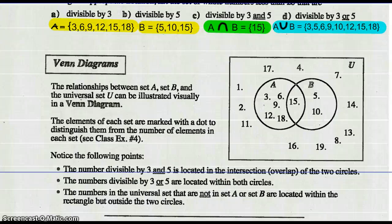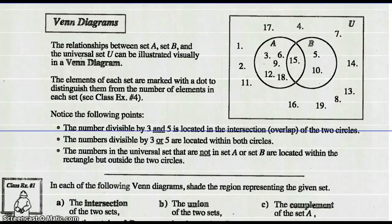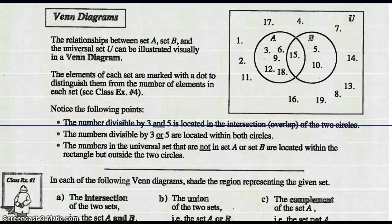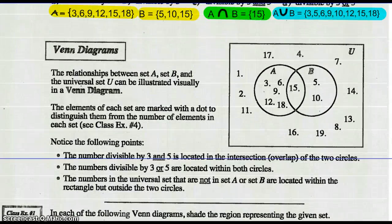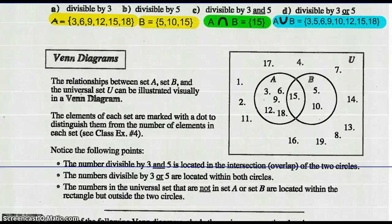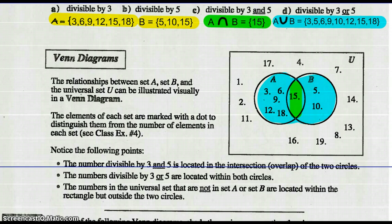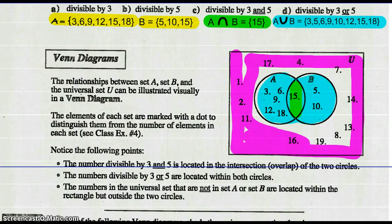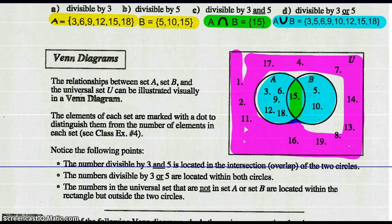The relationship between set A and B and the universal set U is illustrated visually in this Venn Diagram. The elements of each set are marked with a dot to distinguish them from the number of elements in each set. Numbers divisible by 3 and 5 are located in the intersection — the overlap of the two circles. The numbers divisible by 3 or 5 are located within both circles. And the numbers in the universal set that are not in set A or set B are located within the rectangle but outside the circles — that's not A, not B.